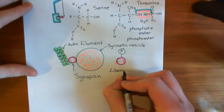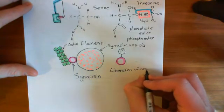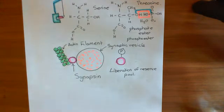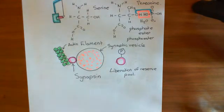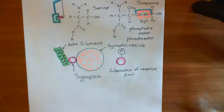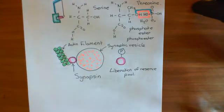This is what we mean by the liberation of the reserve pool. Overall, when an action potential arrives at the axon terminal, it leads to the influx of calcium from the extracellular fluid. Calcium firstly drives membrane fusion of the docked vesicles — the readily releasable pool — with the membrane of the active zone, releasing neurotransmitter into the synaptic cleft. In addition, it activates CAM kinase 2, which phosphorylates synapsins and liberates the reserve pool, allowing those synaptic vesicles to start making their way towards the active zone to dock and begin fusion.